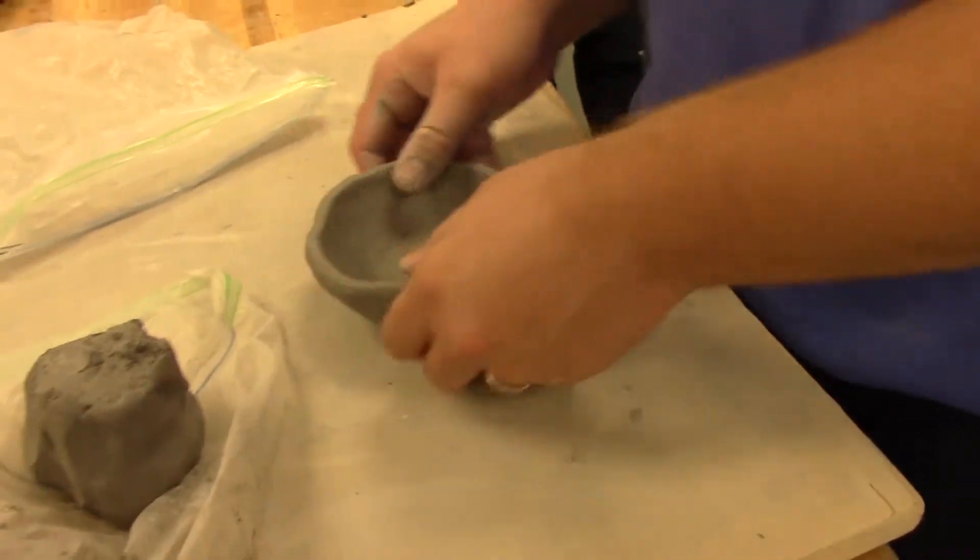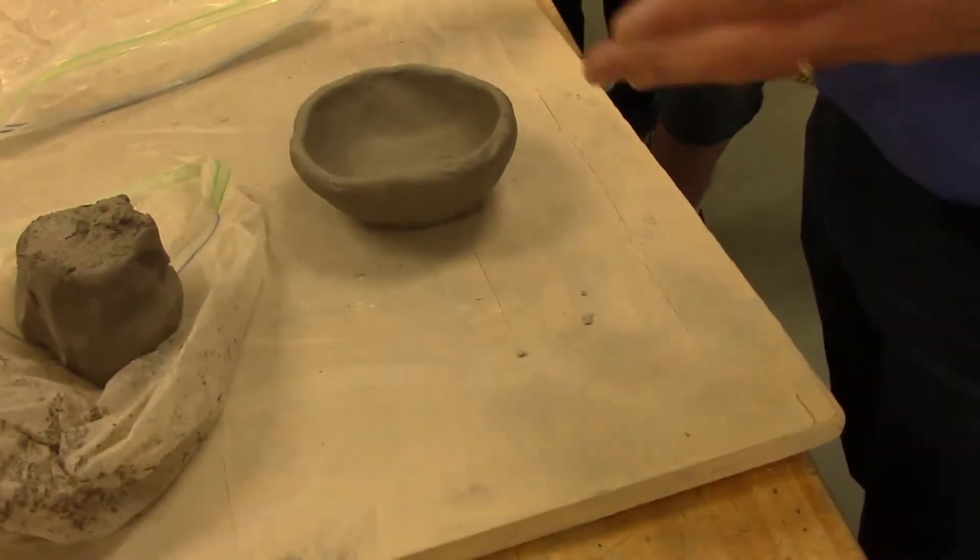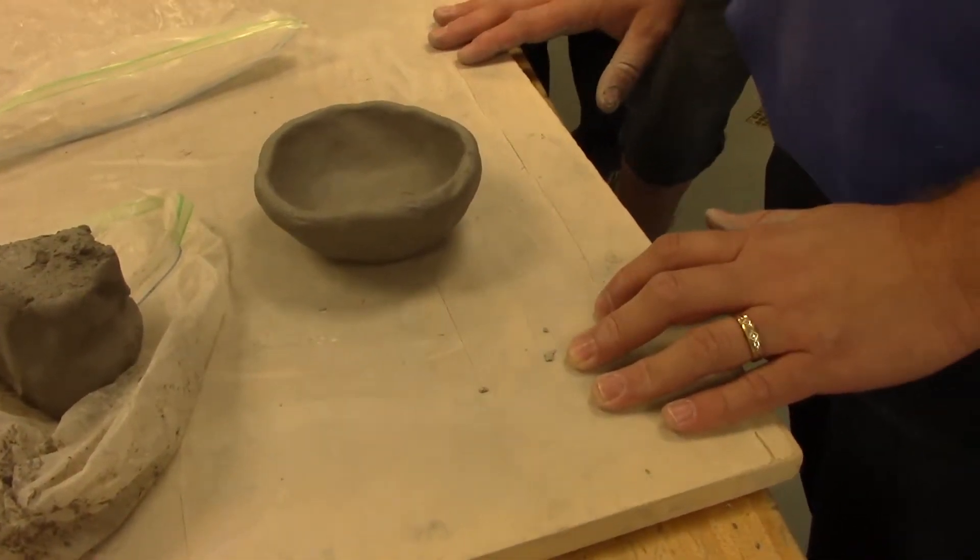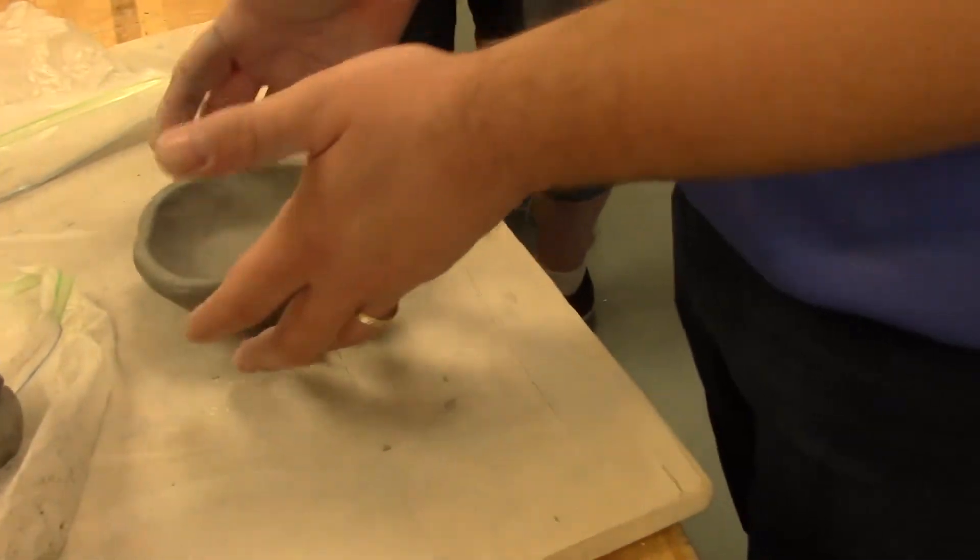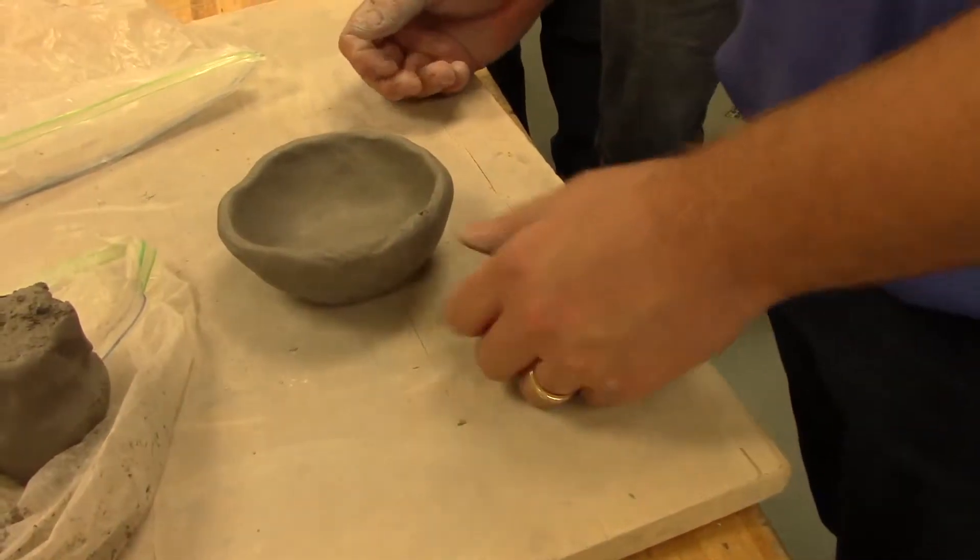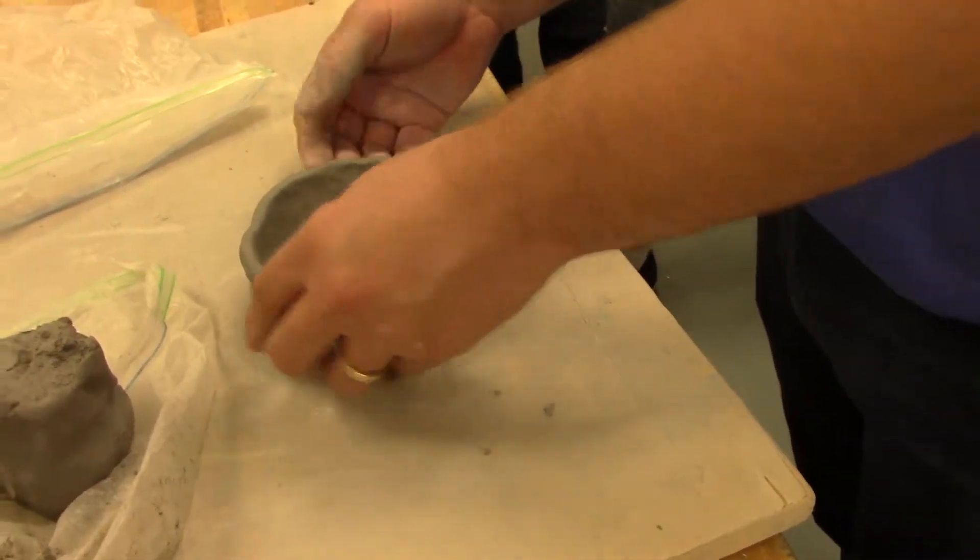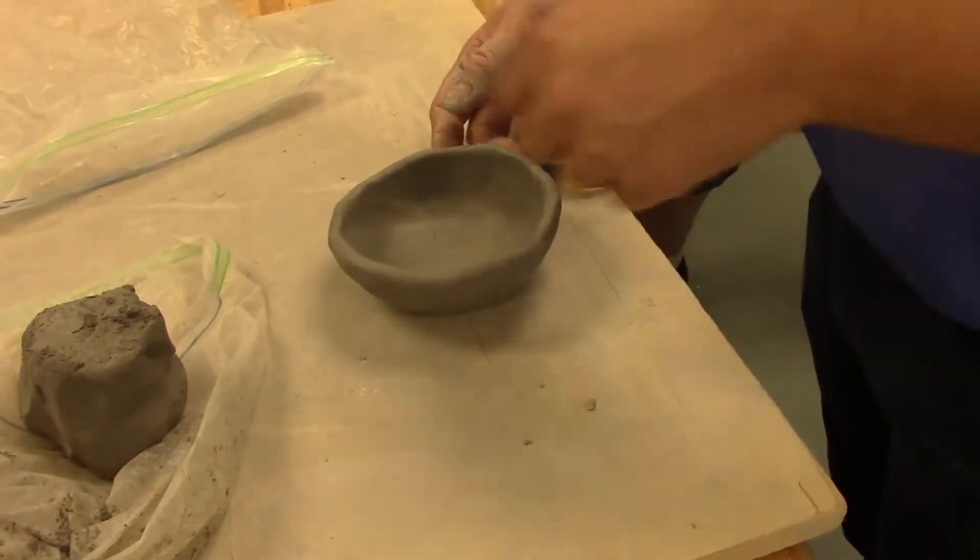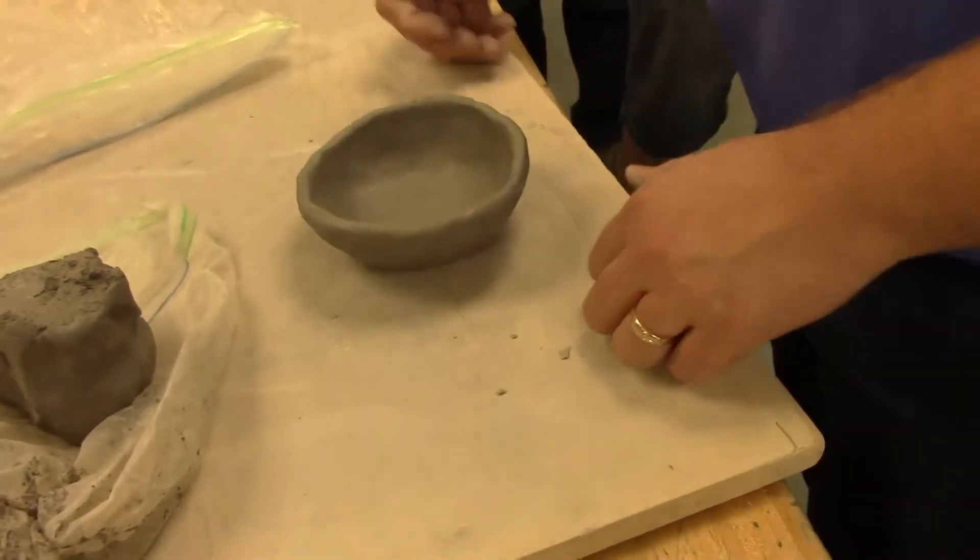Can we paint it? Yep. So after this dries, you can do all kinds of things. You can paint it with an under glaze. While it's wet like this, I could take some clay tools and kind of carve designs into the side on the inside and outside.